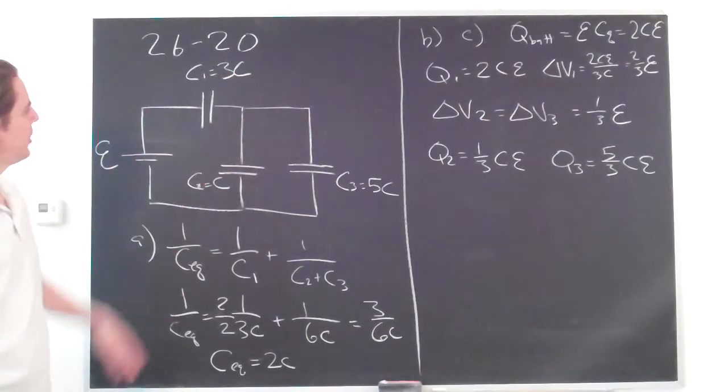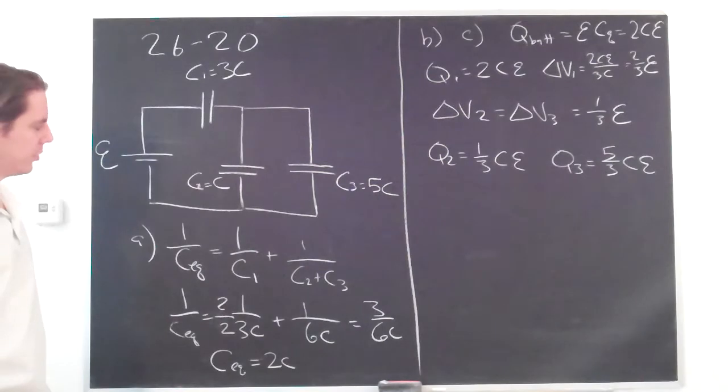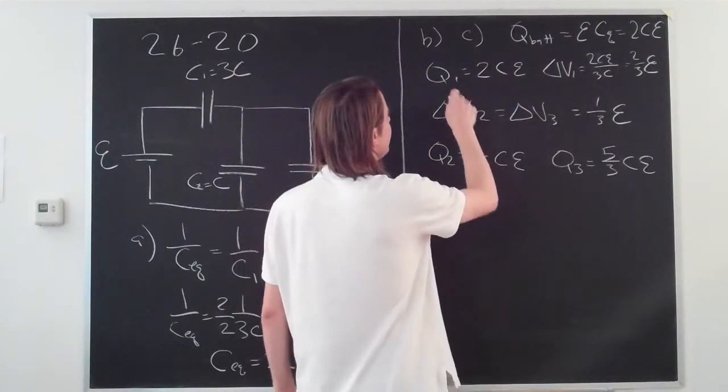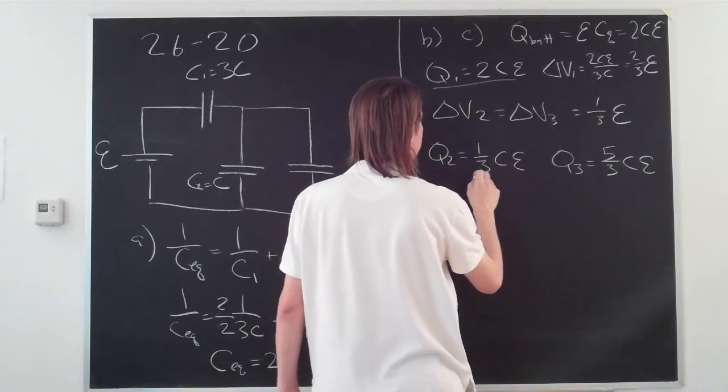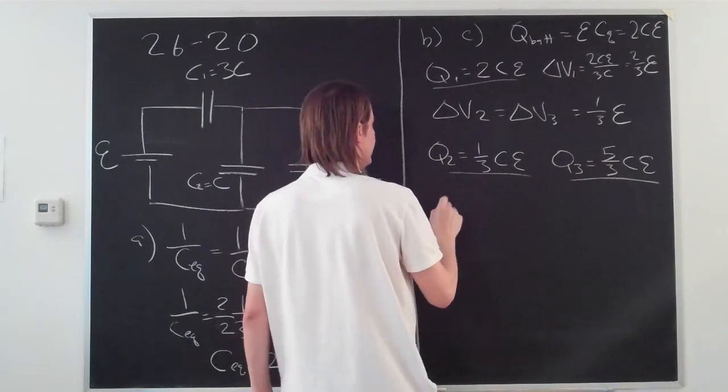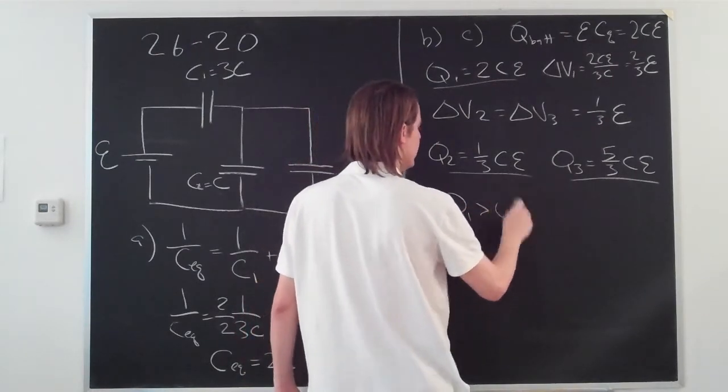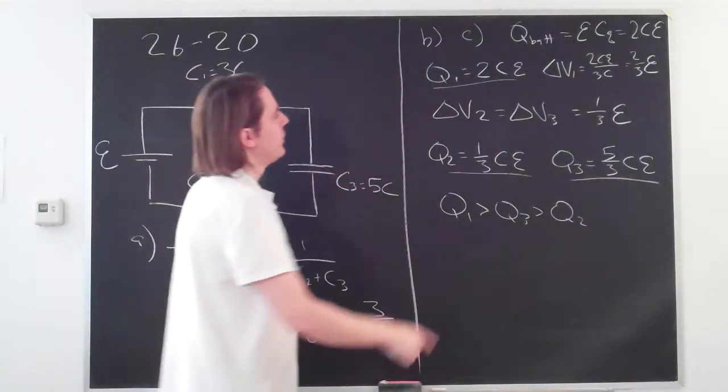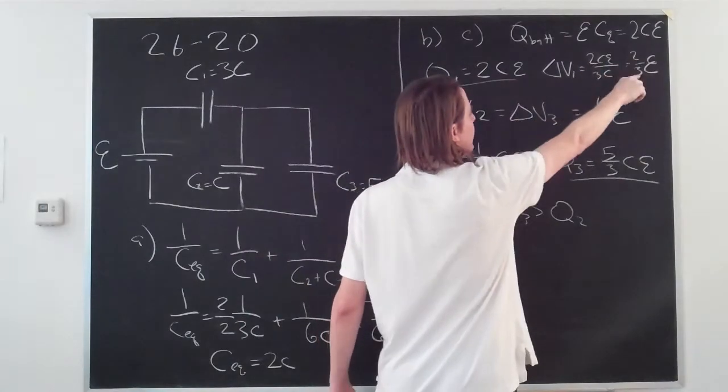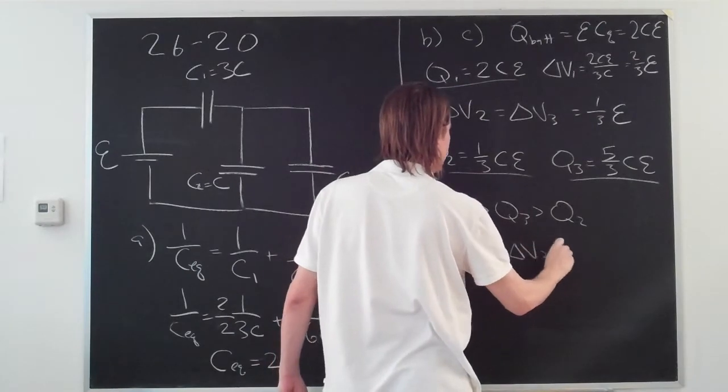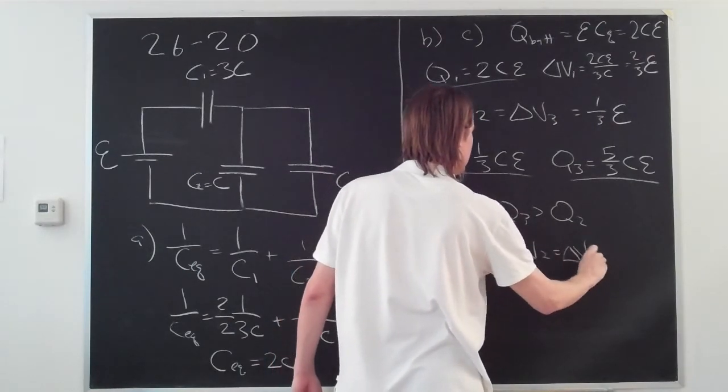So we've actually worked out the entire circuit, all the capacitances, all the voltages, all the charges. So now the question was to put them in order from greatest to least. So in terms of Q, here we have two CE, here we have a third CE, here we have five-thirds CE, which is a little bit less than two. So it goes Q1 is greater than Q3 is greater than Q2. And then for delta Vs, this one was two-thirds and these were one-third, so it's delta V1 is greater than delta V2, which equals delta V3.